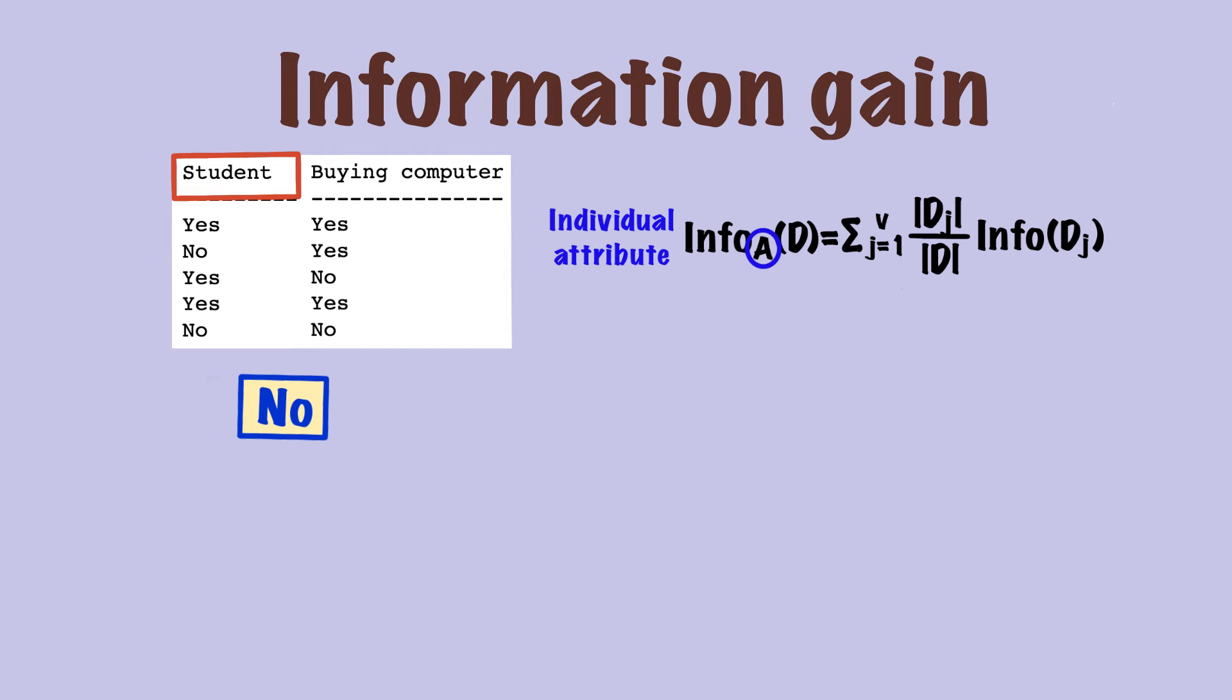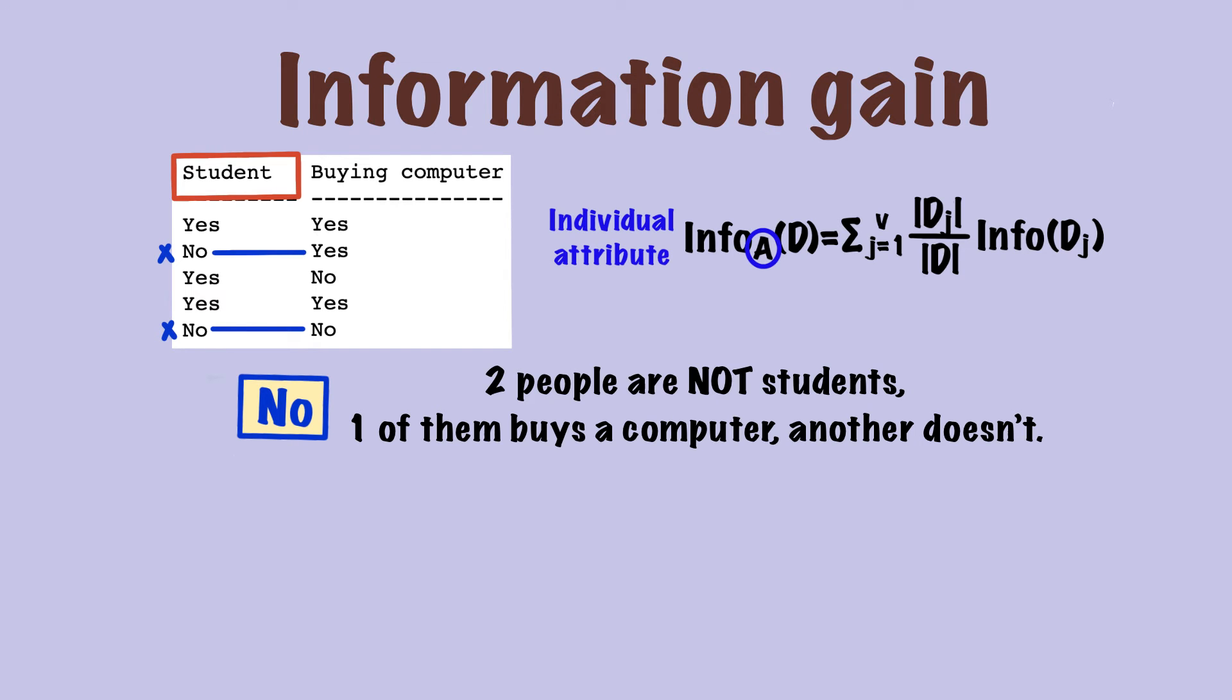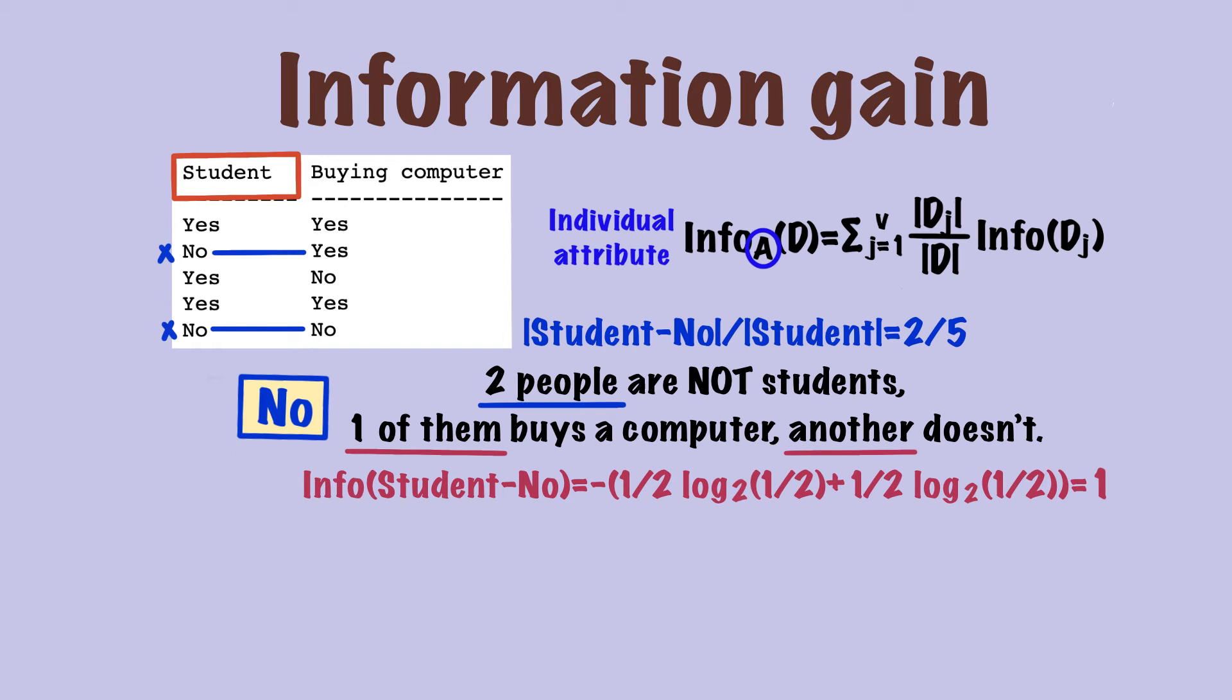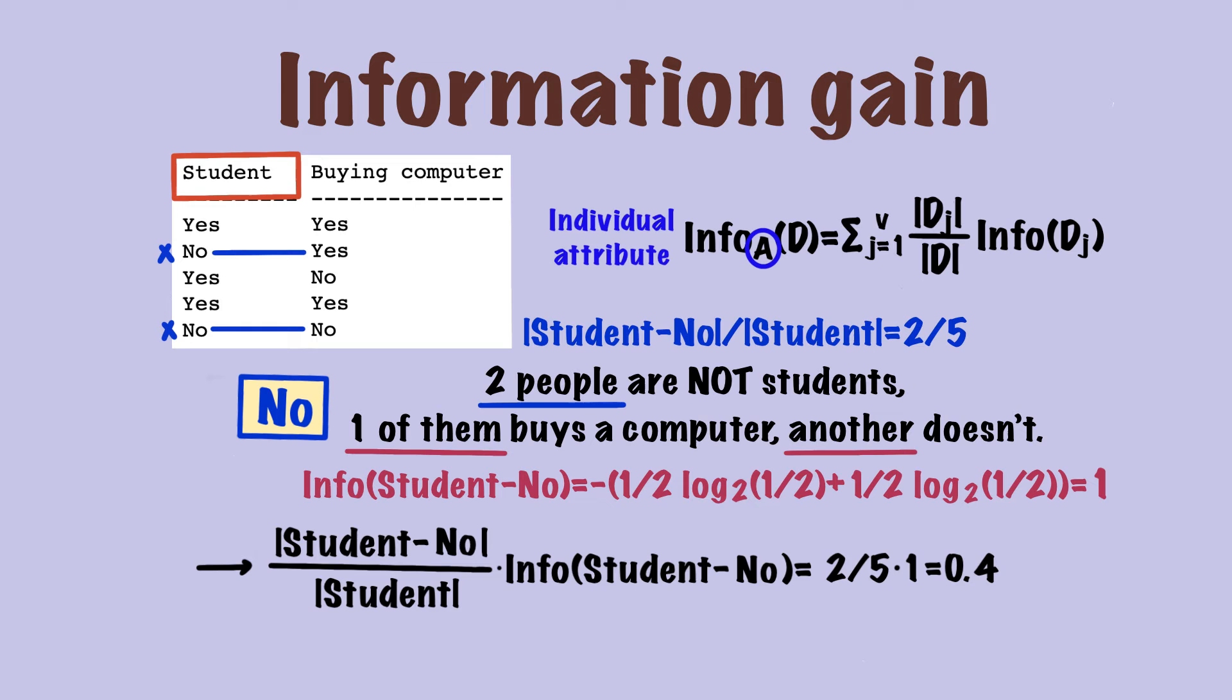Next, we deal with the class no. We observe two people are not students. One of them buys a computer, another doesn't. Again, the first part of the formula is just the proportion of people that are not students, which is 2 over 5. Then, the entropy for class no is 1, because this class doesn't provide any information regarding the target attribute. Therefore, the number for no is 2 over 5 times 1, which is 0.4.